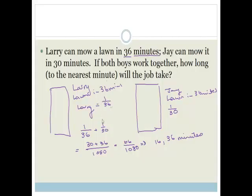Let me explain how I got that. We said, Larry does the lawn in 36 minutes. So therefore the whole of the lawn, if you took 1 minute, he does 1 over 36 of it. Jay does the whole lawn in 30 minutes. So therefore he does 1 over 30 of the lawn in 1 minute. So 1 over 36 plus 1 over 30 gives you how much they're doing together.